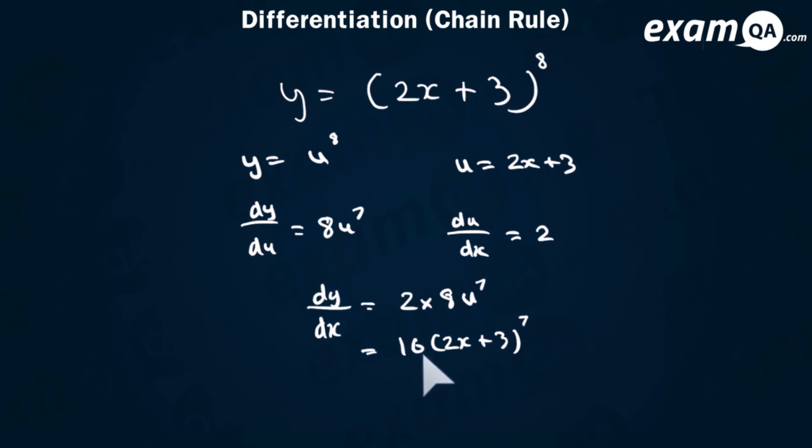Now in this question, technically, 2x plus 3 to the power of 8, you could have just expanded it using binomial expansion. And then differentiate each one using the AS differentiation method. However, that will take too long. And then simplifying the answer, you're going to factorize again. Now using the chain rule, we've managed to do it very simply.